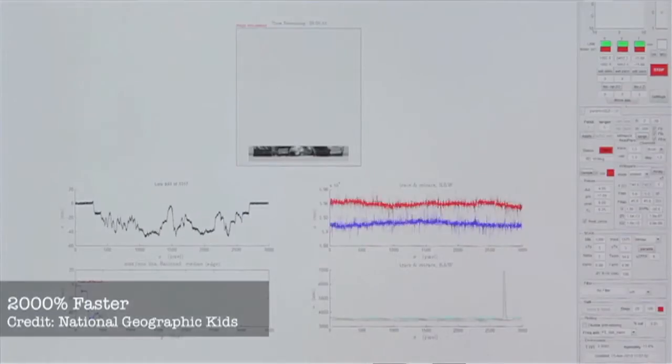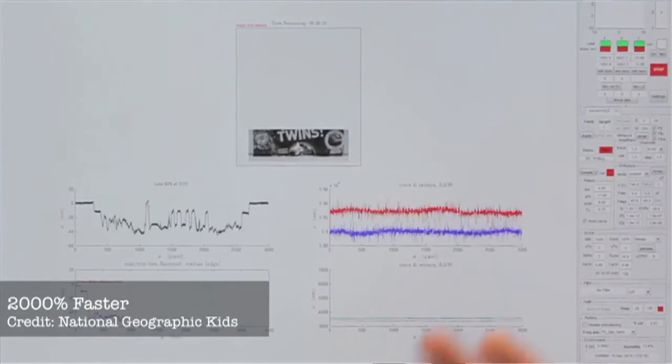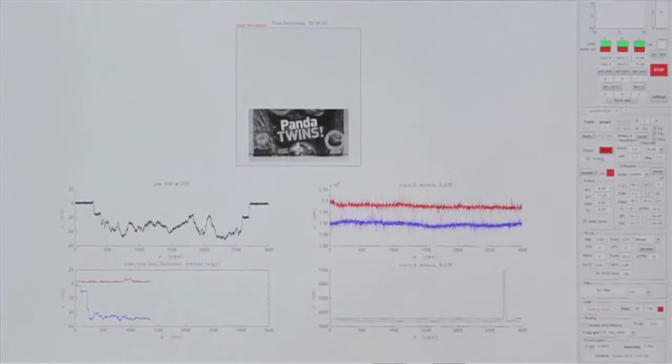The nice thing about this in comparison to conventional lithography is that you can switch on the interaction mechanism between the tip and the sample. From left to right we write a structure, and from right to left we switch off the tip and read the structure back using the same tip. You get direct feedback of what you have done during the writing process. We can adjust the writing parameters to get very precise and controlled patterning.